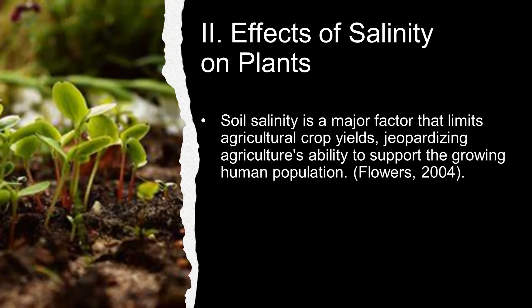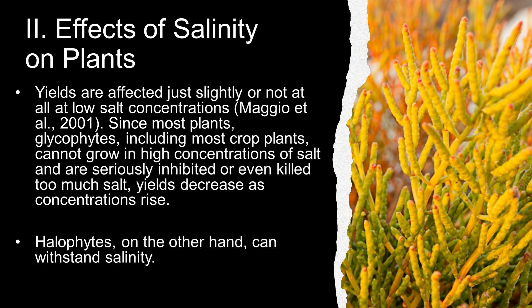According to TJ Flowers of 2004, soil salinity is a major factor that limits agricultural crop yields, jeopardizing agriculture's ability to support the growing human population. According to Hasegawa et al. 2001, yields are affected only slightly or not at all at low salt concentrations. Since most plants, glycophytes, including most crop plants, cannot grow in high concentrations of salt and are seriously inhibited or even killed by too much salt, yields decrease as concentrations rise. According to Armand's Intermat of 1986, the explanation is that they are developed in low salinity environments and do not have salt tolerance.